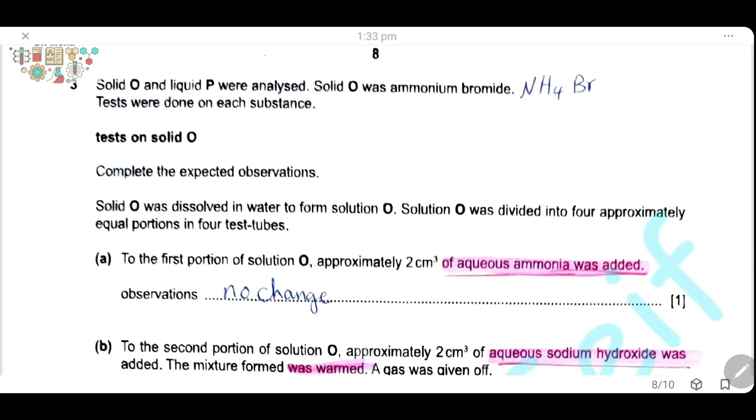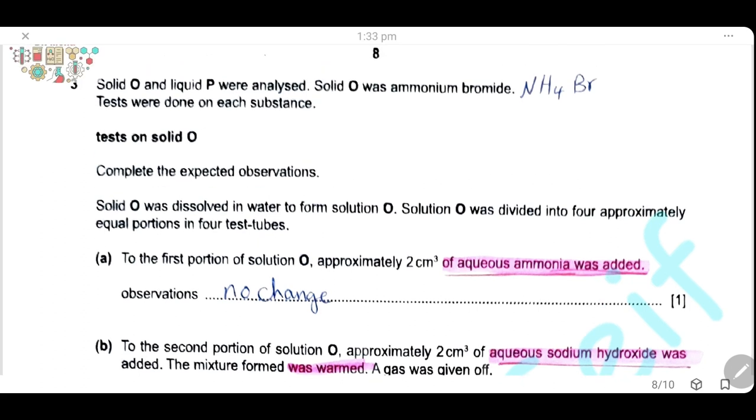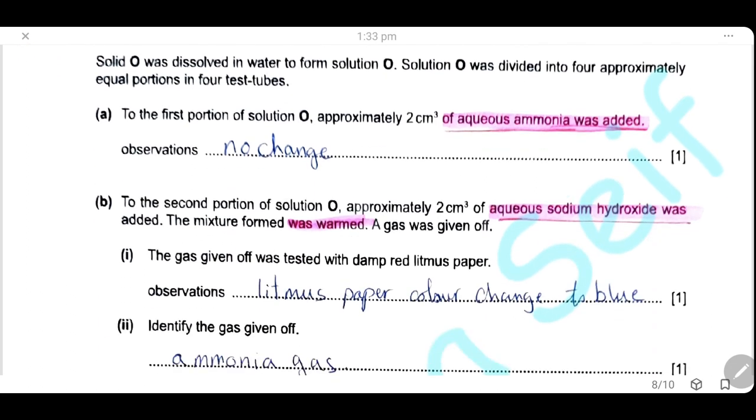Question 3. Solid O and solution P were analyzed, solid O being ammonium bromide. Tests were done on each substance. First, test on solution O. Complete the expected observations. Solid O was dissolved in water to form solution O. Then solution O was divided into four approximately equal portions in four test tubes. To the first portion of solution O, approximately 2 cm³ of aqueous ammonia was added. And here there will be no reaction and no change. The observation is no change.